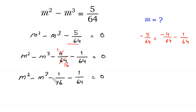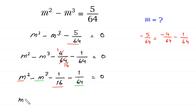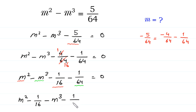Now, because this 1 over 16 is the square of 1 over 4, we write it with this m squared. And because this negative 1 over 64 is the cube of 1 over 4, we write it with this m cubed, like this: m squared minus 1 over 16, minus m cubed minus 1 over 64, is equal to 0.